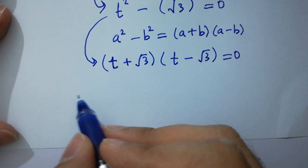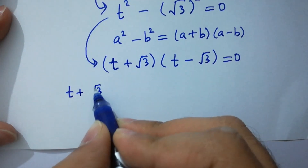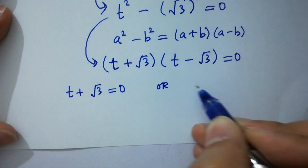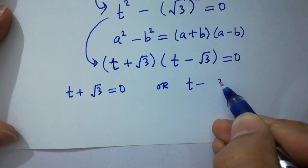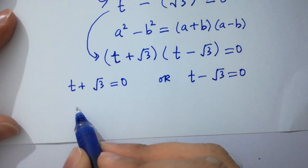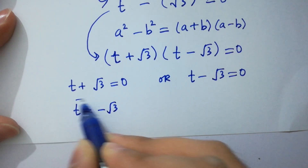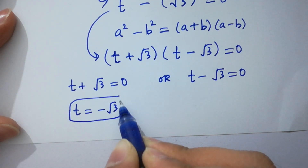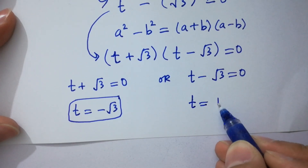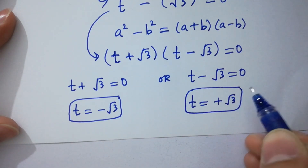Either t plus square root of 3 equals 0, or t minus square root of 3 equals 0. So we get t equals minus square root of 3, and t equals plus square root of 3.